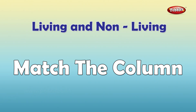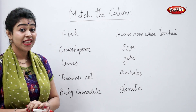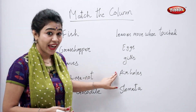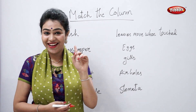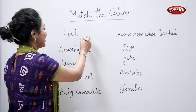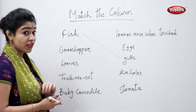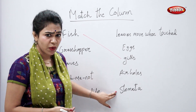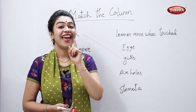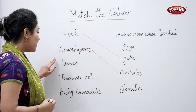Match the column. Students, tell me what does a fish have? They have gills, not air holes. Now tell me, what does a plant have? They have stomata, not air holes.